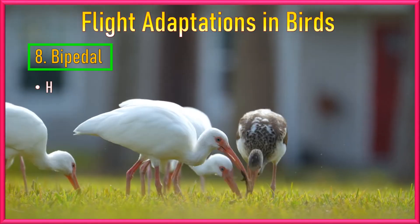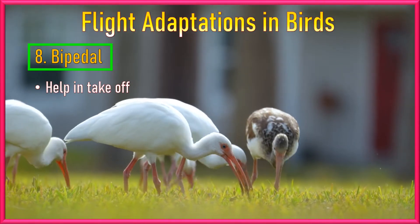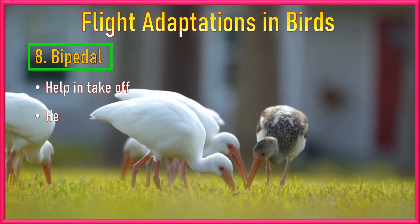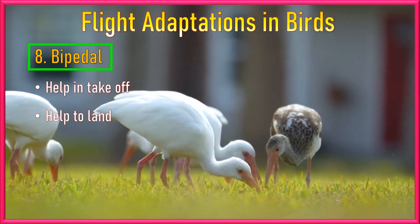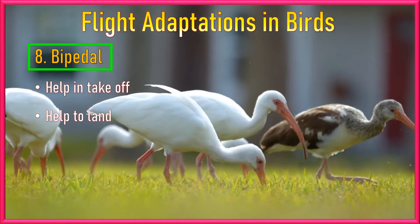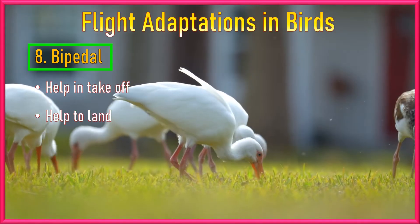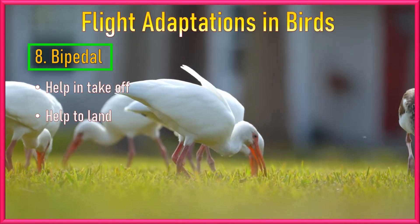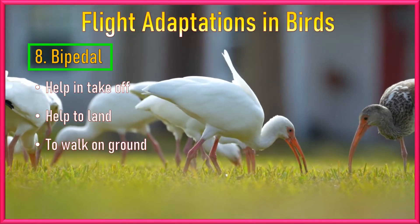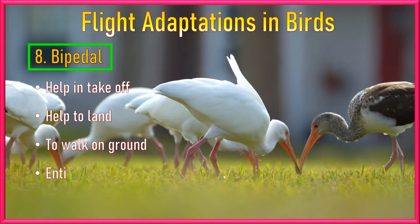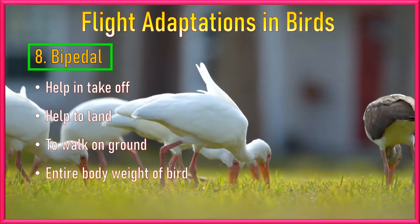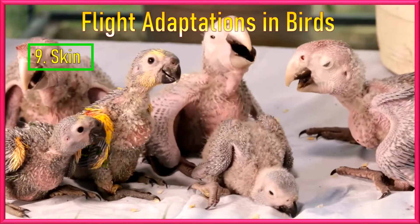Number 8: Bipedal Locomotion. The posterior part of the body of the bird helps in taking off during flight and also helps the bird to land. The hind limbs help in locomotion on land as well, and they can support the entire body weight of a bird.